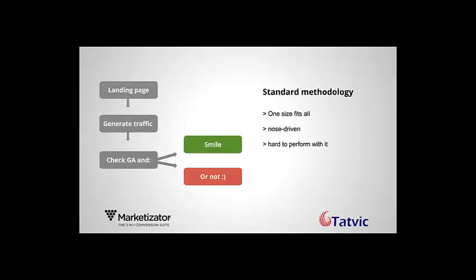The standard methodology for conversion rate optimization is that you have a landing page, you generate traffic, you check Google Analytics, and either you smile or you're not. The statistics show that more than 97% of visits are not converting. In most cases, you are not smiling. The problem with this standard methodology is that it is gut-driven, it has a one-size-fits-all approach, and it's hard to perform on the long run with it.